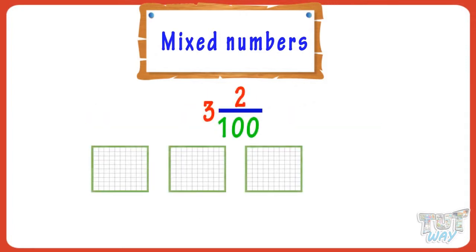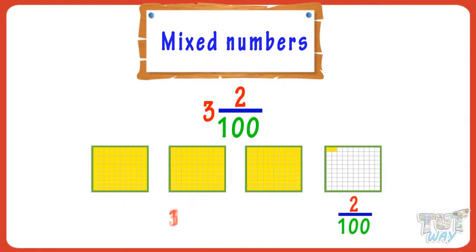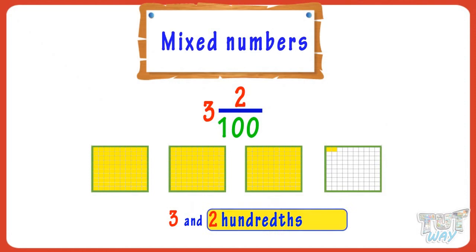It is 3 and 2 hundredths. Now let's write it in decimals. 2 hundredths is written as 0.02, so we will write it as 3.02.